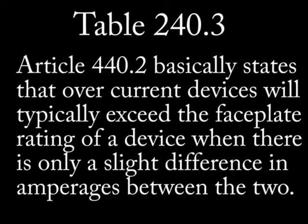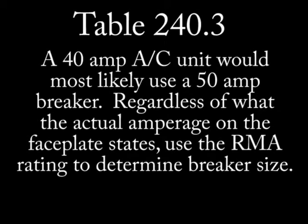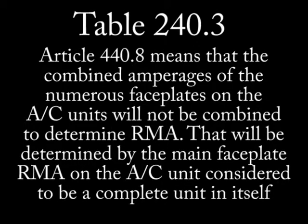What we're looking for is article 440.2, which when simplified means that your overcurrent device or breaker will always exceed the faceplate rating under specific conditions called rounding off. For example, if an HVAC unit has a faceplate rating of 34 amps, then the correct breaker size would be 40 amps. If the faceplate rating is 40 amps, then you would size up to a 50 amp breaker. If a 45 amp breaker were available, that would be the one to use. Article 440.8 means that all devices making up an air conditioner with various faceplate ratings will be considered a single machine, and the unit faceplate will be used to determine the level of overcurrent protection, not a combination of faceplate ratings.